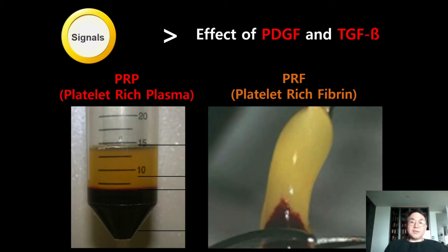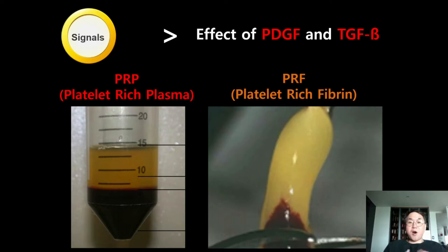To increase the success rate of GBR or bone grafting, some dentists mix the graft material with PRP (platelet-rich plasma), and sometimes we can cover the GBR site with PRF (platelet-rich fibrin). By concentrating platelets, we can increase the amount of PDGF and TGF-beta, which is quite a good strategy to maximize the success rate of bone regeneration after GBR. If the GBR defect size is quite large or the defect shape is difficult, you can consider using PRP or PRF.